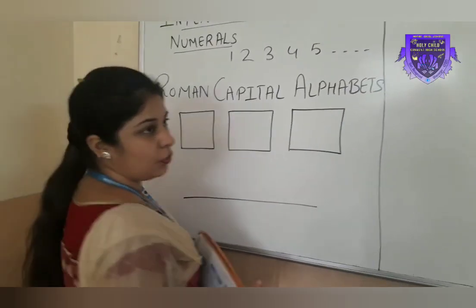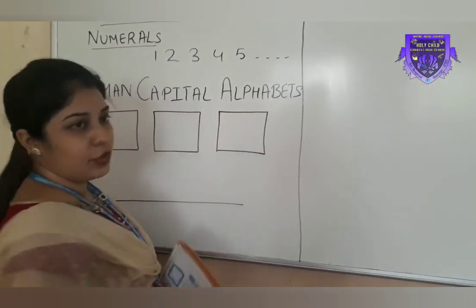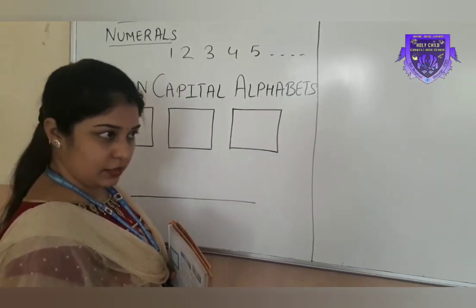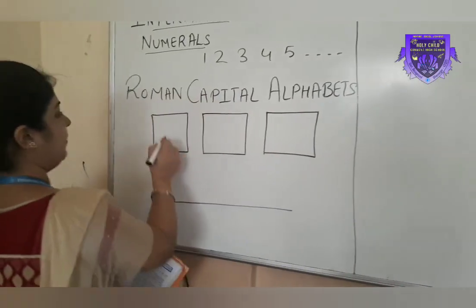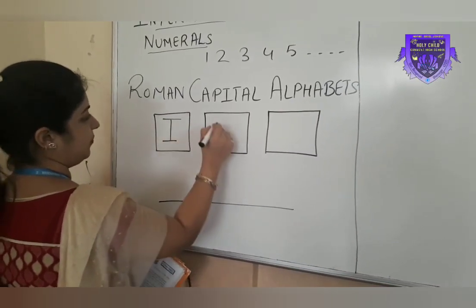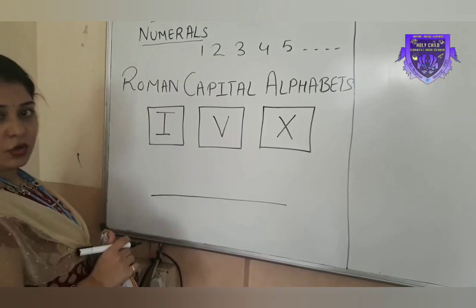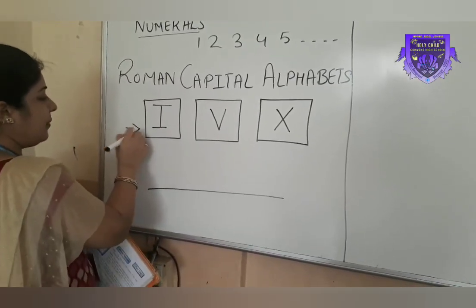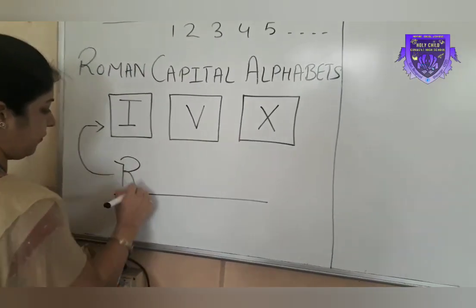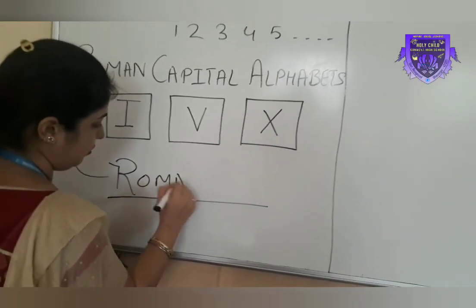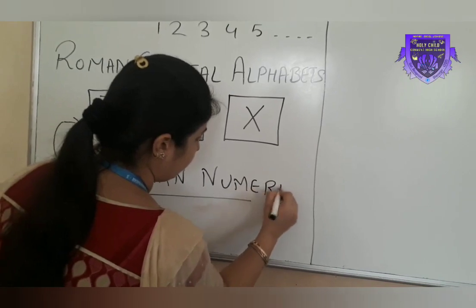But long ago in Europe, Roman capital alphabets were used to write numbers. Now which were those alphabets? They were I, V, and X. These 3 alphabets were used to write Roman numerals.